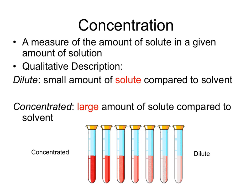Qualitatively, we can use the words dilute and concentrated to describe the amount of solute in solution. Dilute means a small amount of solute compared to solvent, whereas concentrated is a large amount of solute compared to solvent. As seen in the diagram, a dilute solution will have a paler color because less solute is dissolved within the solvent, while a concentrated solution is darker in color because there is more solute dissolved.